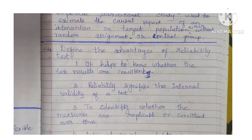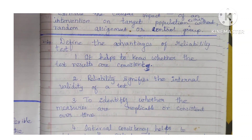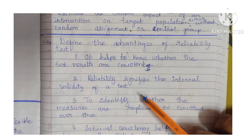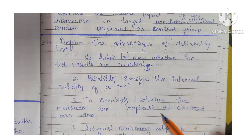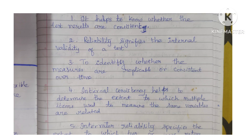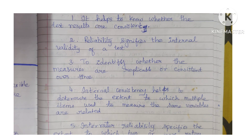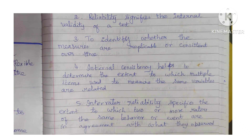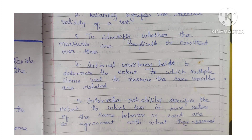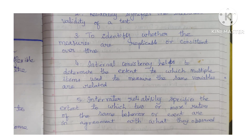Question 24: Define the advantages of reliability test. It helps to know whether the test results are consistent. Reliability signifies the internal validity of your test to identify whether the measures are replicable or consistent over time. Internal consistency helps to determine the extent to which multiple items measuring the same variable are related. Inter-rater reliability specifies the extent to which two or more raters of the same behavior or event are in agreement with what they observed.